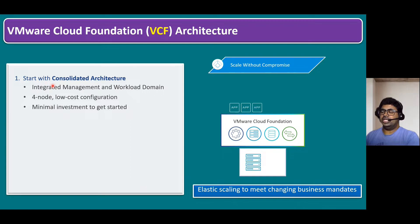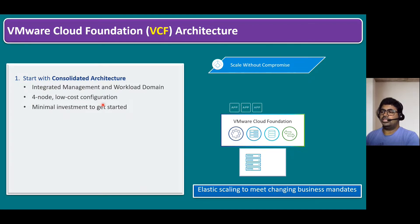The first key point of consolidated architecture is integrated management and workload domain — suitable for small organizations. Management and workload domains are combined: management consists of management VMs and workload domain consists of production, business-critical application VMs. The initial setup starts with four nodes, making it a low-cost configuration with minimal investment to get started with VCF architecture.